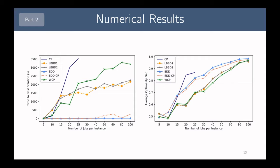On the left, this shows the time to the best solution within one hour for each solution approach. The CP model, the two LBBD models, and the warm-started CP model all take a fairly long time to find the best solution within one hour. This is not desirable for real-world problems because companies want solutions calculated very quickly. The EDD heuristic and the hybrid approach fixing the packing and improving the schedule are performing quite well, finding solutions very quickly — almost instantaneously.